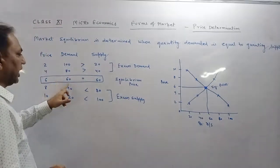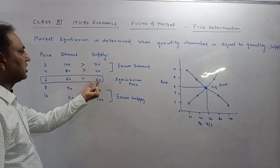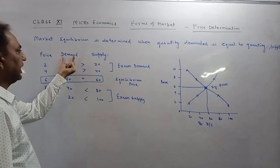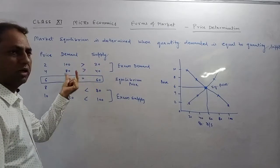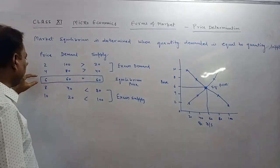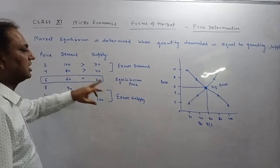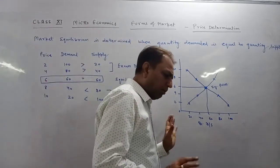Look, we have seen here. We have seen 60, 60. The quantity demanded and quantity supplied both are common, similar, same. And the price, 6, is the equivalent price. This is very clear.